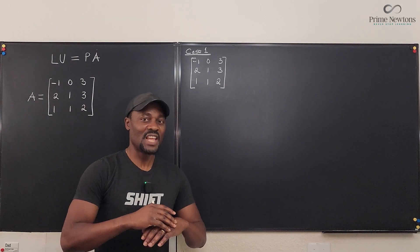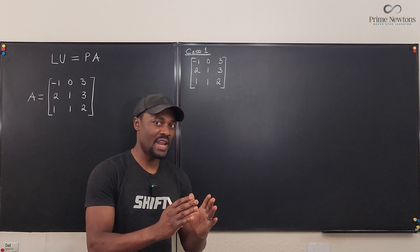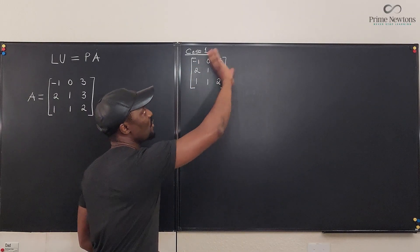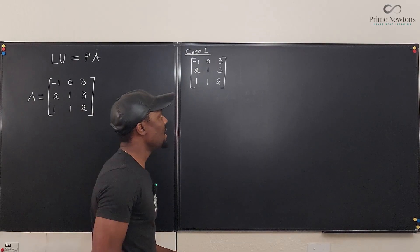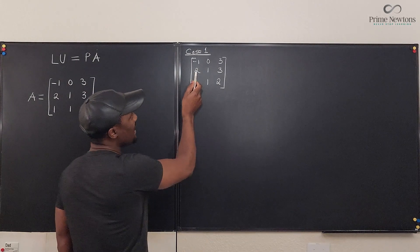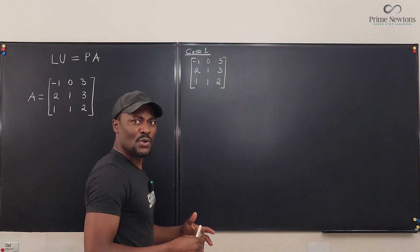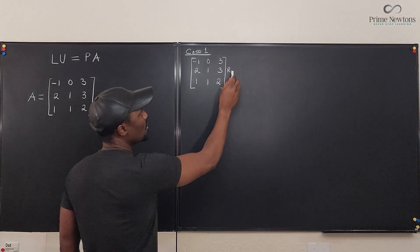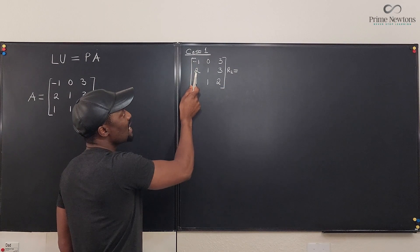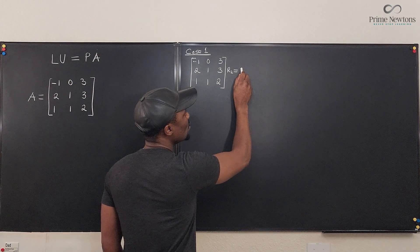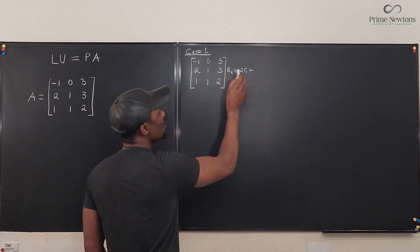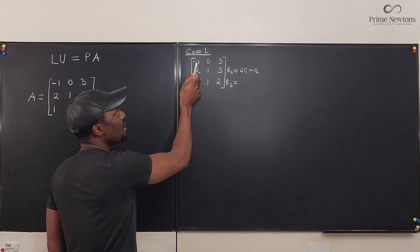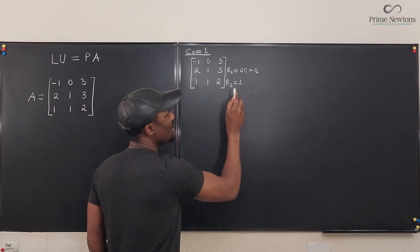I'm going to take the first case in which I did not switch any rows — I'm just going to go straight to creating zeros below the main diagonal. That's the mission, because when you have zeros below the diagonal, you call it an upper triangular matrix, and that's our U. I need to make a zero here, so I do the usual elementary row operations. I'm going to say the new R2 equals: I need two of row one added to row two. For row three, I will need one of row one added to it.